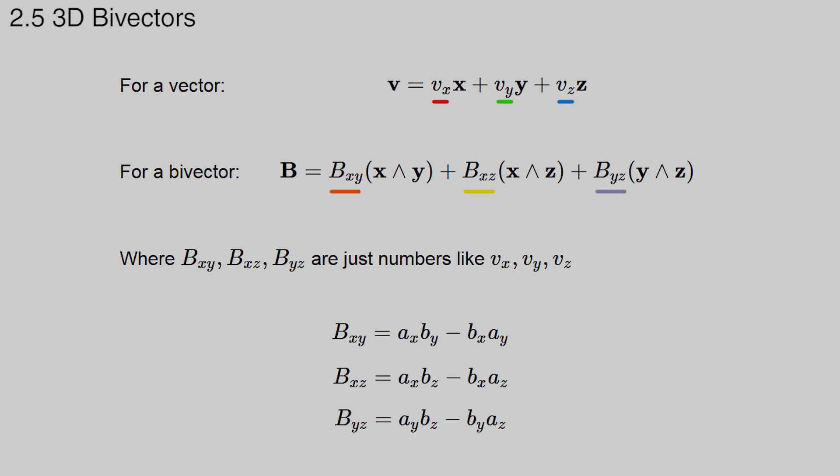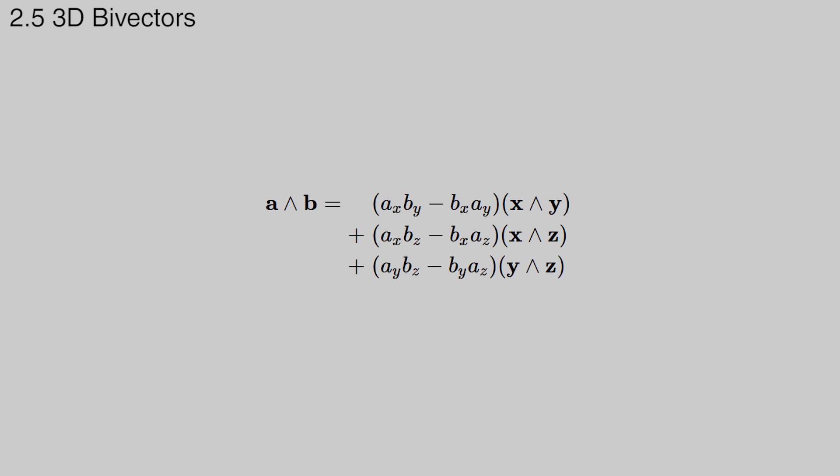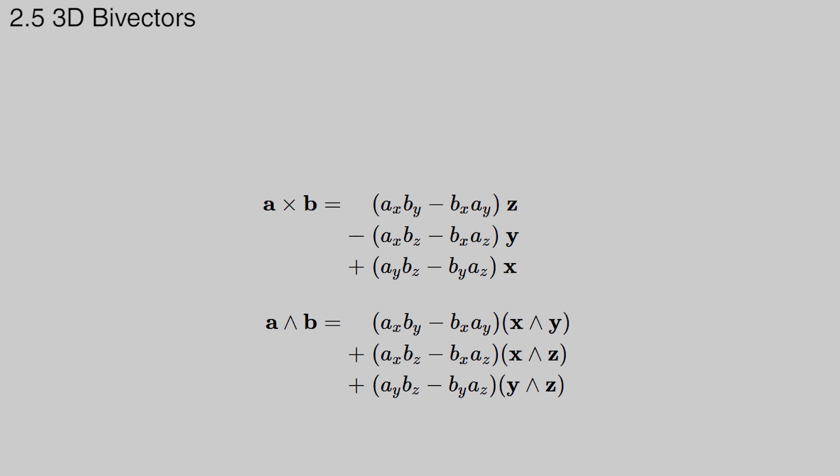Using the same method as before, we find that the actual values of the components look a lot like the xy component from the 2D case, but applied to all three planes. In 3D, the definition of the outer product is very similar to that of the cross product. In fact, in 3D, a vector that comes from a cross product, such as a normal vector, will have three components which are equal to the components of the bivector. The numbers are the same, but the basis is different.